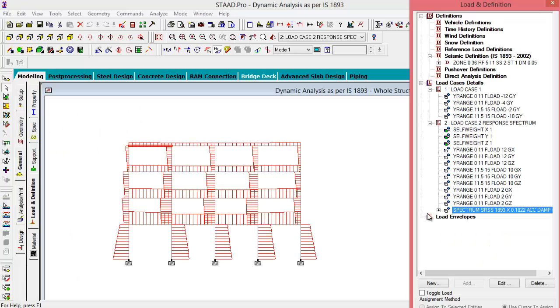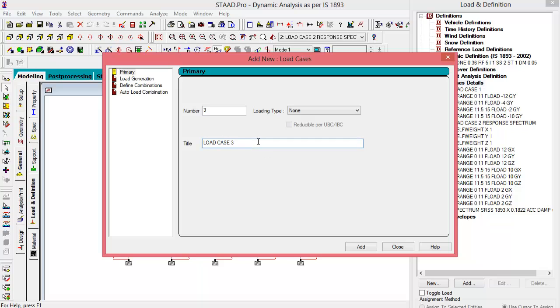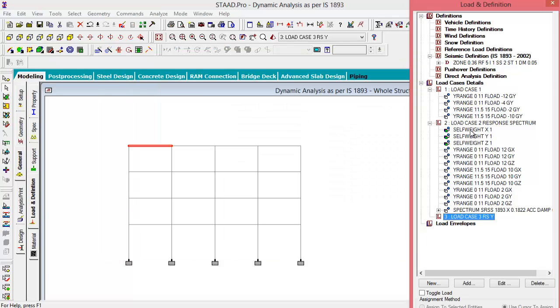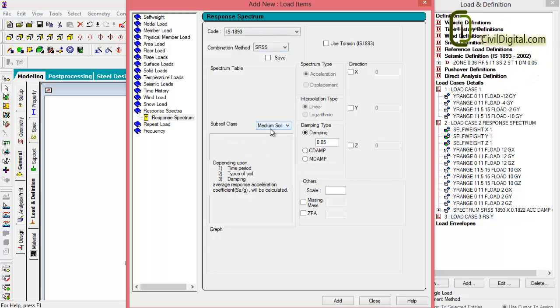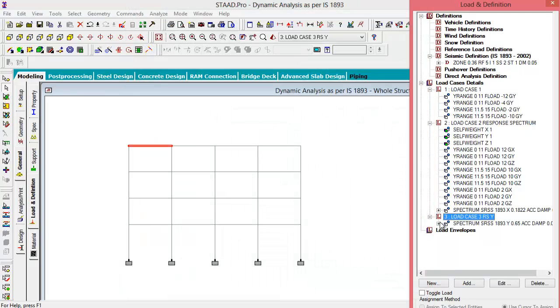Suppose we want to define a spectral load case in Y and Z direction separately, what you have to do is define a load case, load case number 3 for response spectrum in Y direction and click add. Click yes to continue. You don't have to specify the dynamic weights that we have already specified in load case 2. All you have to specify is the spectrum command with the code IS1893 and the soil type was medium soil with a Y value, whatever value that we want, let it be 0.65. Now click add.